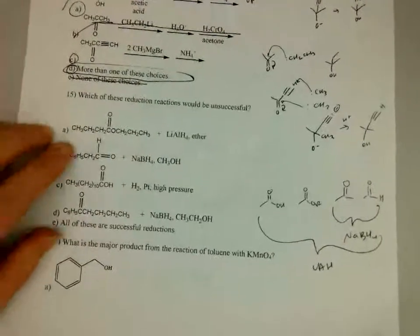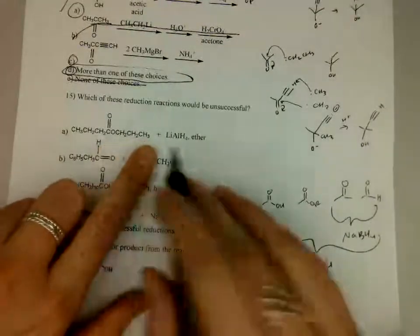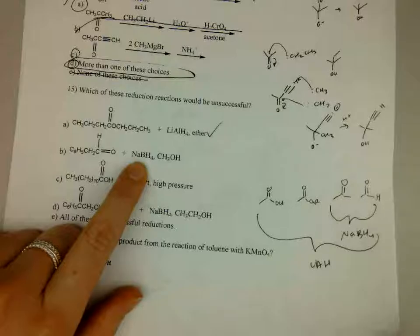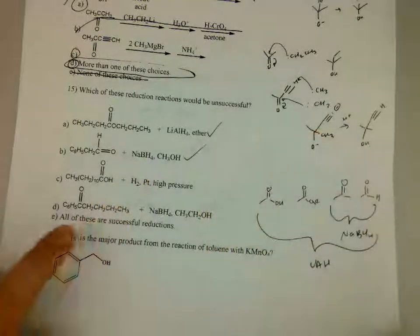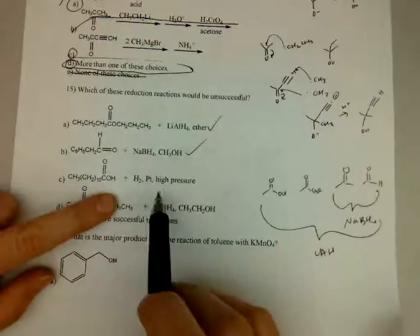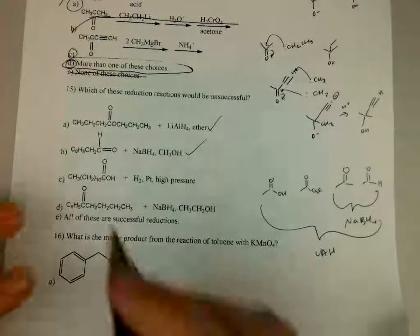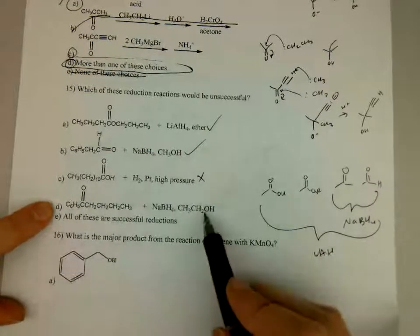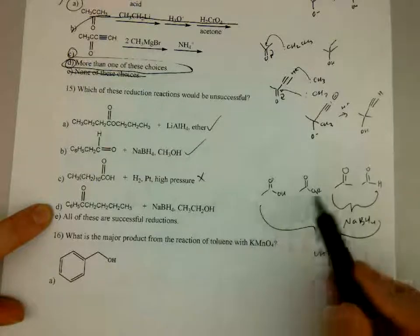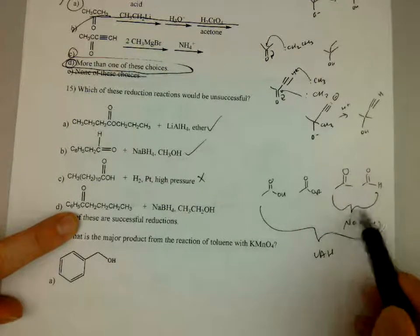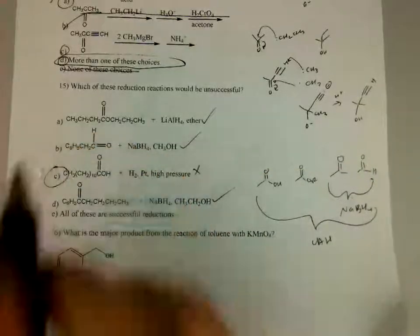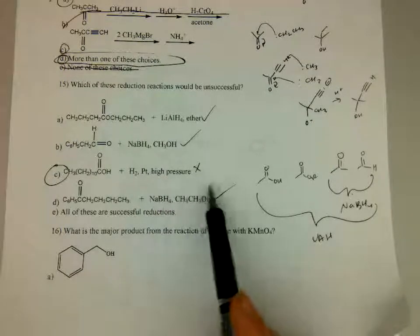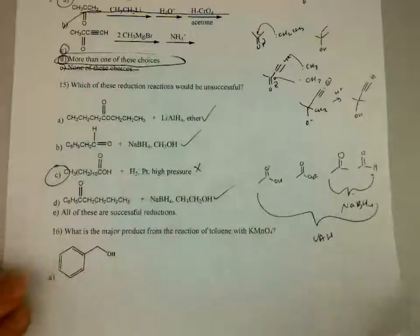So we've got an ester and LAH, that works. NaBH4 with an aldehyde, that works. H2 with platinum, maybe with high pressure, but I'm going to think that probably won't work, and that's probably our answer. And then D, NaBH4 with a ketone, that works. So I always draw that out. So I think answer choice C is our right one. You could maybe force this if you had really high pressure, but I don't think I've seen that. So I think this would be your right answer.